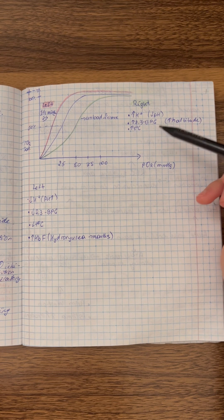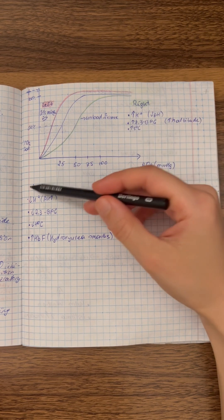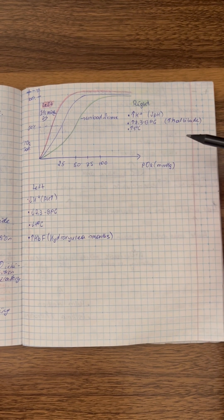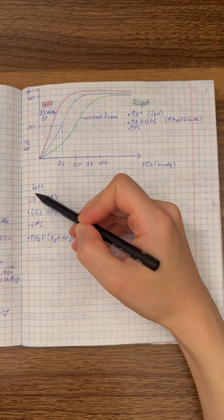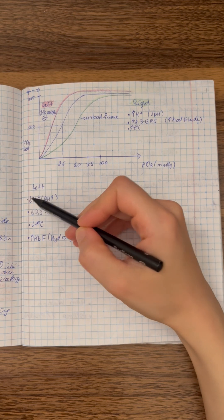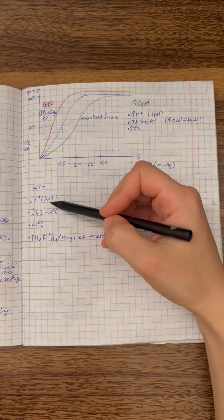There are several cases where we can have left shift and right shift. It is very high yield and we need to know all of them. For example, left shift can occur when H+ is decreased. When H+ is decreased, it means we have increased pH.